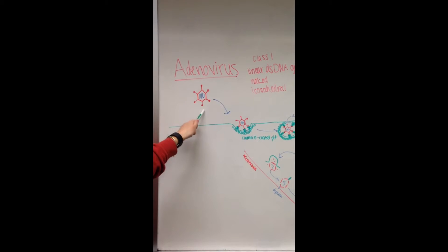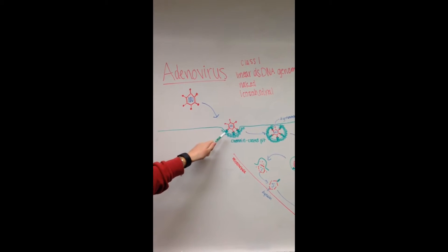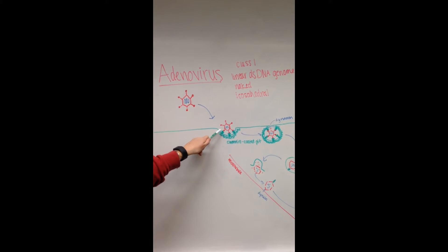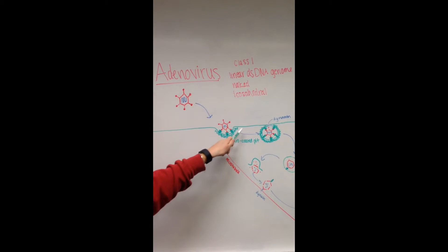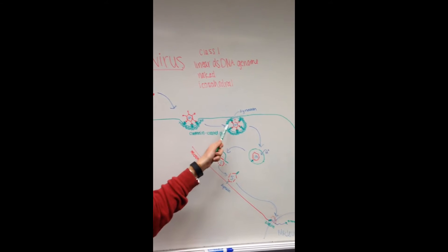The spikes on the adenovirus capsid are useful in attaching to the host cell. They attach to fiber receptor molecules and co-receptors on clathrin-coated pits and are then taken into the cell as an endosome.